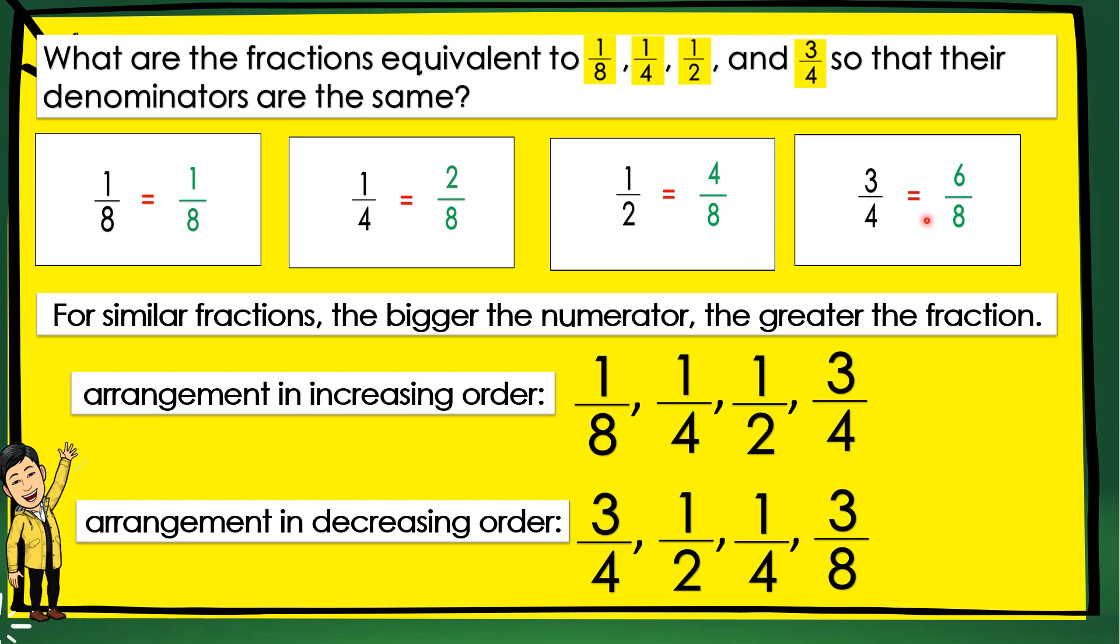And 3/4 is equal to 6/8. For similar fractions, the bigger the numerator, the greater the fraction. Arrangement in increasing order: 1/8, 1/4, 1/2, and then 3/4. Arrangement in decreasing order: 3/4, 1/2, 1/4, and 1/8.